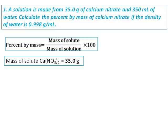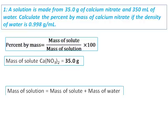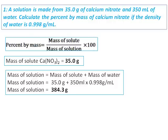Mass of solution is mass of solute plus mass of water. Mass of water will be volume of water times the density. Volume of water is 350 and density is also given. With all these data, I can calculate the mass of solution as 384.3.